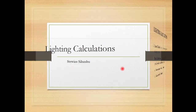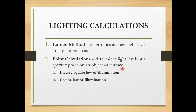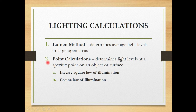Artificial lighting regressions are normally done using two methods. The first is the Lumen method, which determines light levels in large open areas like workshops and warehouses. The second is the point regression method, where you determine the light on a specific spot, using the inverse square law of illumination and the cosine law of illumination.